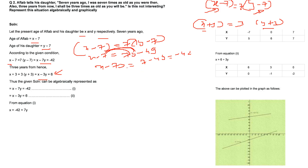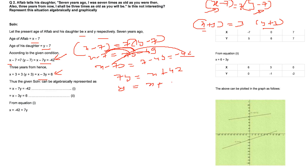To plot the lines, rewrite each equation with Y on the left. From X − 7Y = −42: 7Y = X + 42, so Y = (X + 42)/7. From X − 3Y = 6: 3Y = X − 6, so Y = (X − 6)/3. Now substitute convenient X values to get integer Y values for easy plotting.